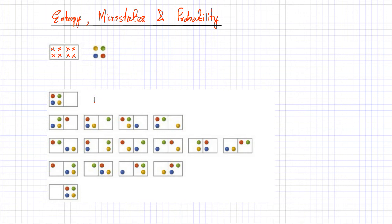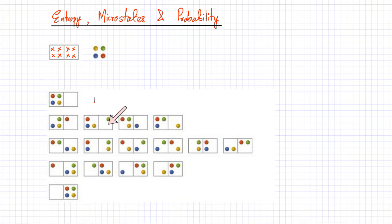Then I'm going to place three particles on the left-hand side and one on the right-hand side, and figure out how many microstates that gives. With three particles on one side and one particle on the right-hand side, there are four possible arrangements — so a total of four microstates.